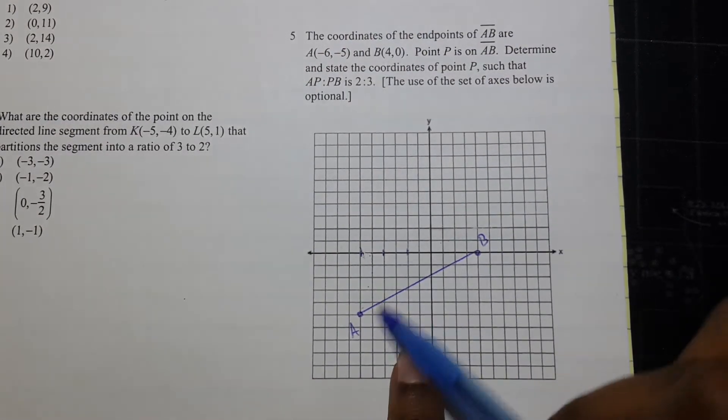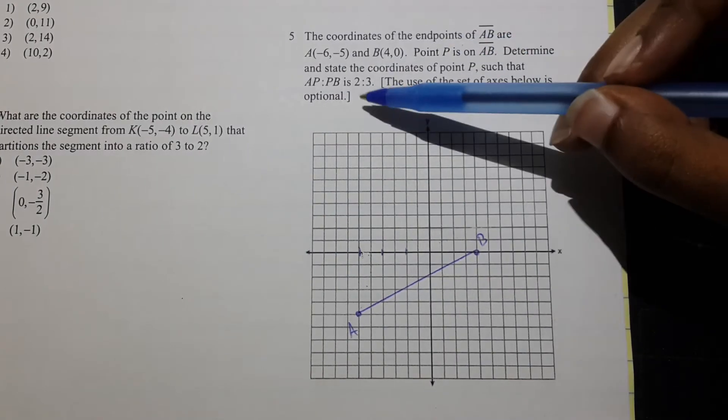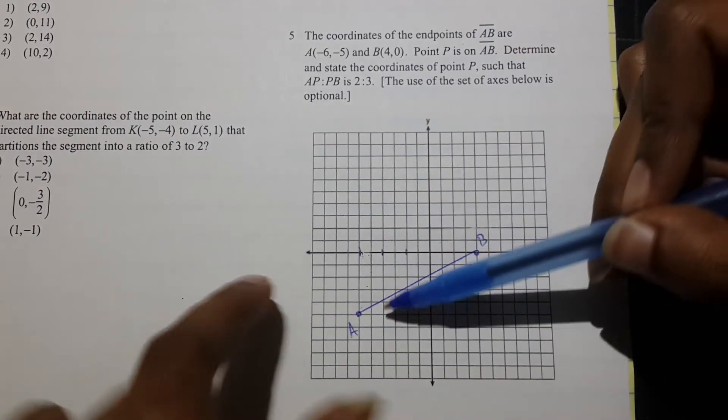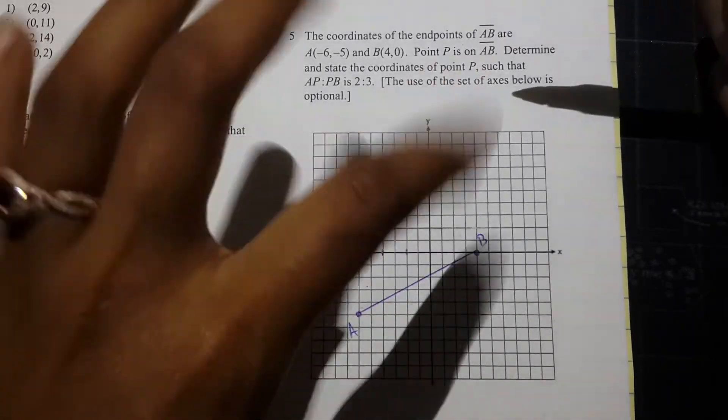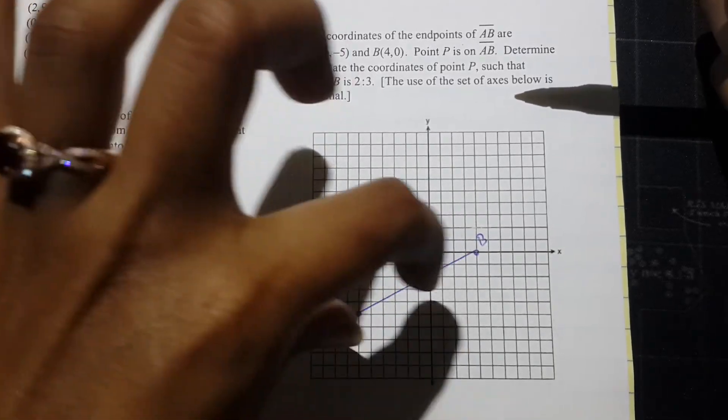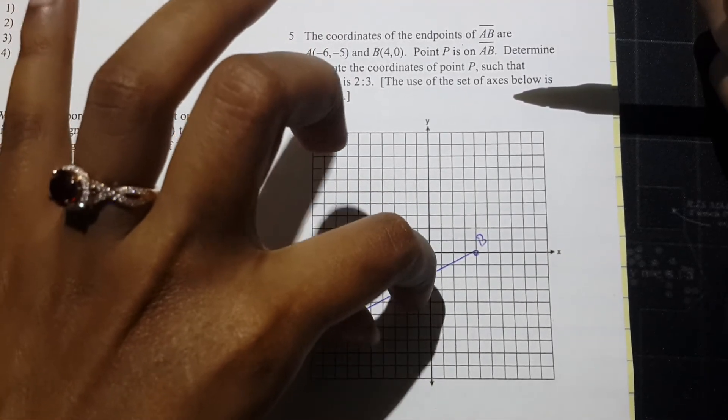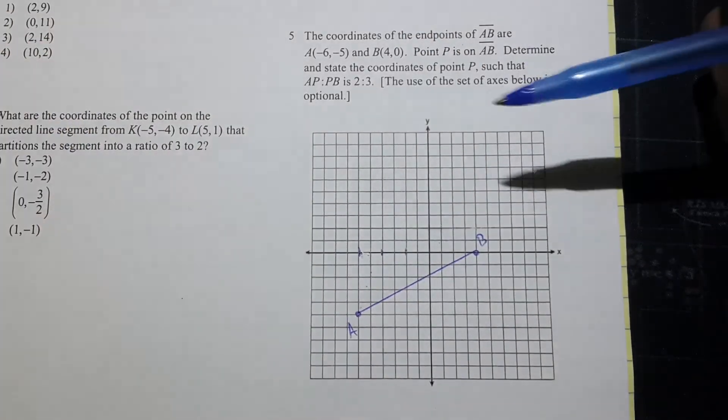And somewhere along this line segment is going to be the point P, but that point P is going to divide this line segment into a 2 to 3 ratio. So that means, unlike the midpoint where everything is divided equally, the first portion is going to be smaller, twice some amount, and the second portion is going to be bigger, 3 times some amount.